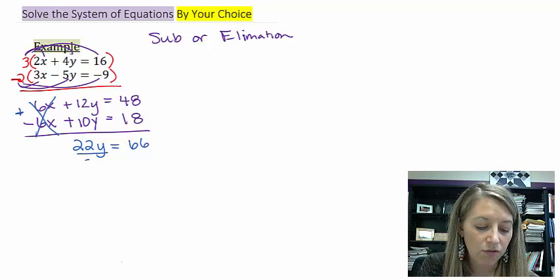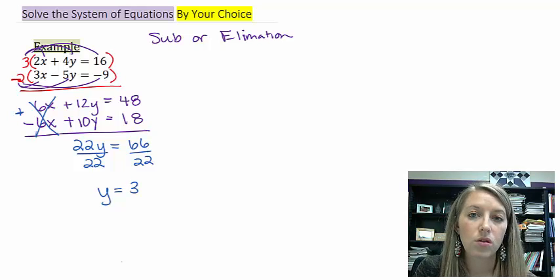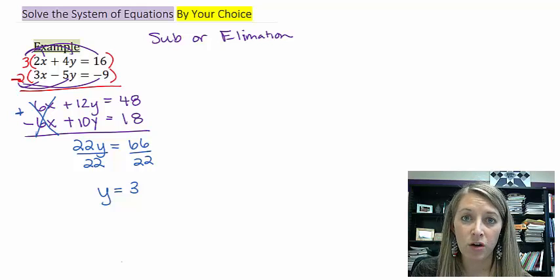This gives me 22Y is equal to 66. Now, when I solve for my Y variable, dividing by 22, this gives me Y is equal to 3. And so now I have my Y variable.